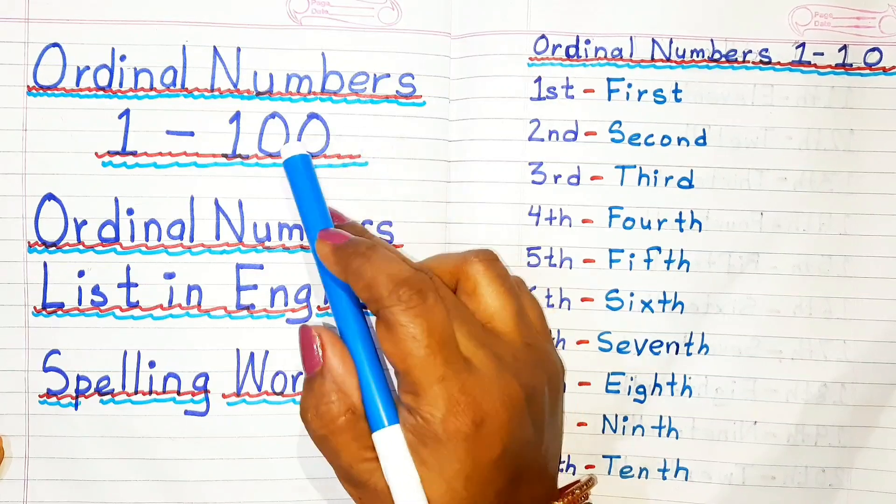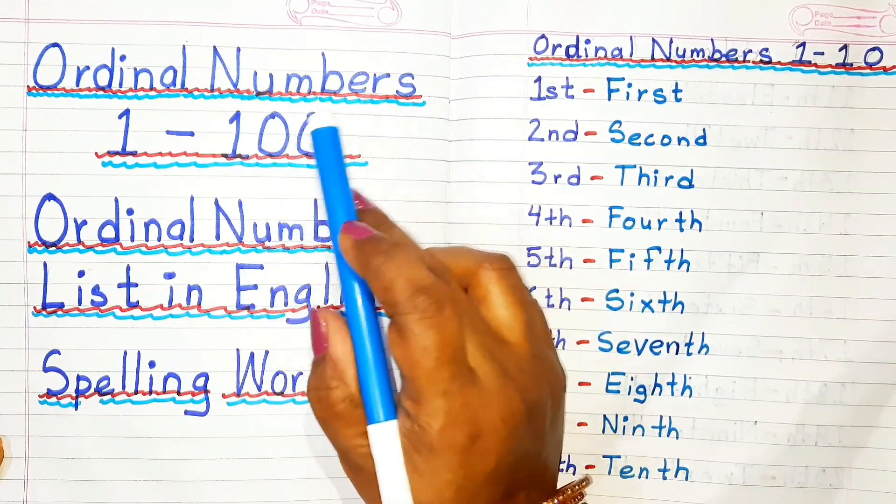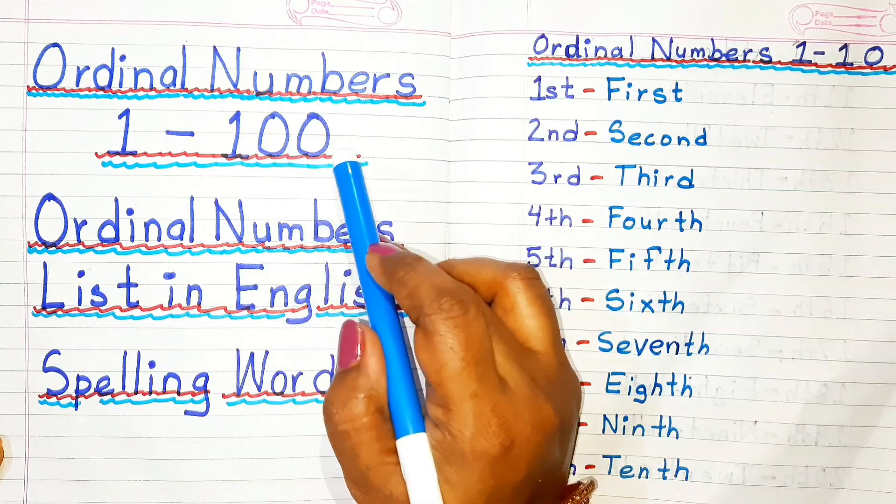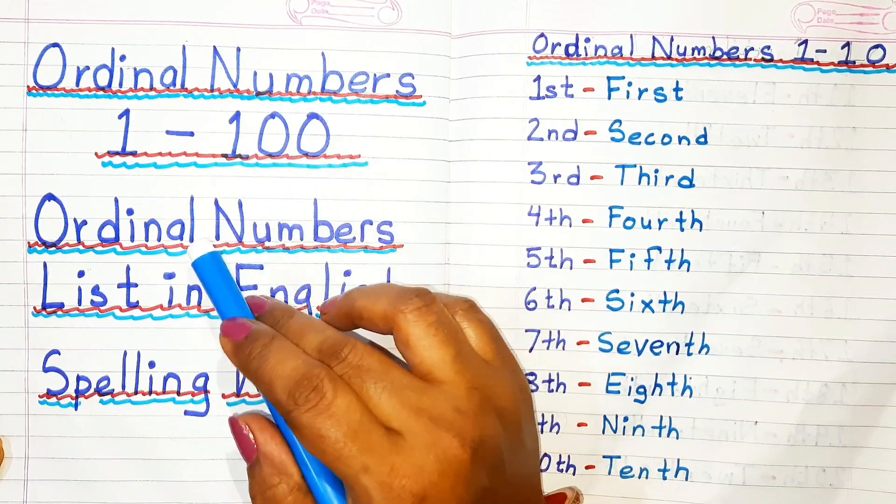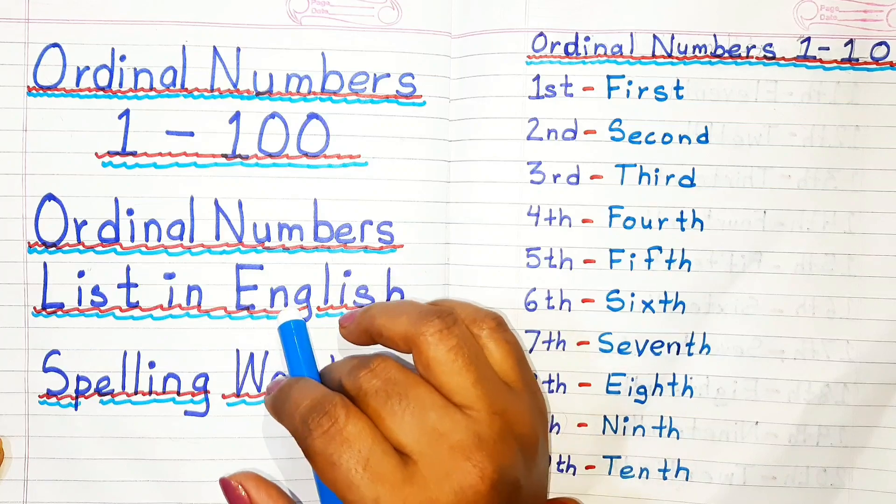Welcome to channel Simple Easy Learning. Today's video topic is Ordinal Numbers. Here we will learn ordinal numbers from 1 to 100 and ordinal number list in English with spelling and pronunciation.